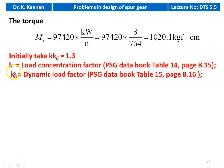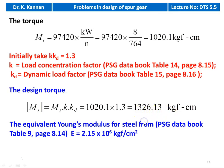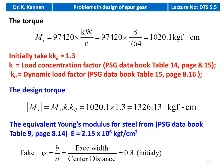Initially take KKd = 1.3 and calculate the design torque: [MT] = MT × KKd = 1,020.1 × 1.3 = 1,326.13 kgf·cm. Equivalent Young's modulus from page 8.14, table 9, for steel: E = 2.15 × 10⁶ kgf/cm². Take ψ = B/A = 0.3 initially.